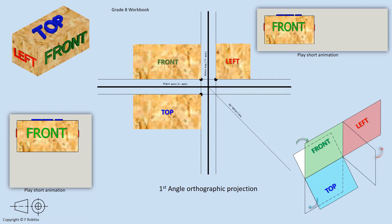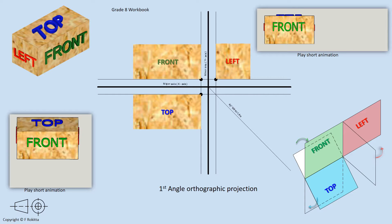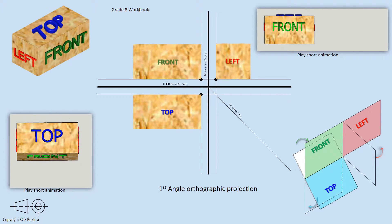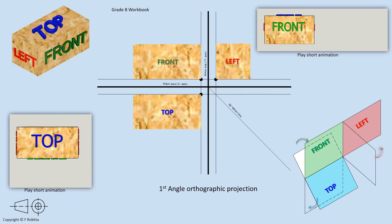Referring back to previous tutorials where we have discussed the glass plane model, we are also going to take a quick look at why we are placing the top view at the bottom and the left view at the top right when we draw in first angle orthographic projection. Playing the animation you will see that we take the front view and we tilt it downwards in order to see the top view from where we are seated. It is as if you have tilted the front view on a hinge and tilted towards you to see the top view.